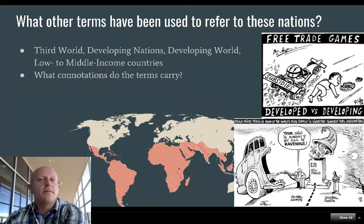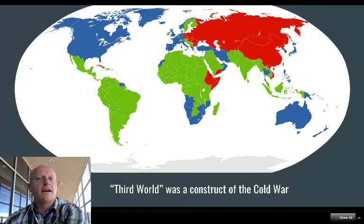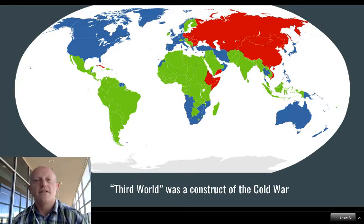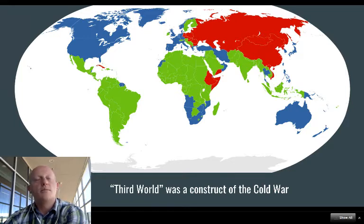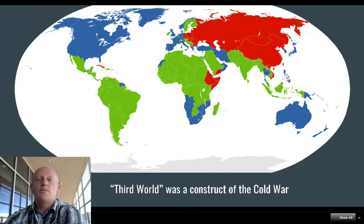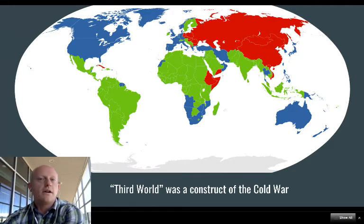That's why we have to be careful about how we characterize these places. The term 'third world' — still used even though it's pretty outdated — was a construct of the Cold War. The Cold War was a conflict involving nuclear proliferation, arms races, a space race, and ongoing threats between the United States and the Soviet Union from the end of World War II through the early 1990s with the collapse of the Soviet Union.